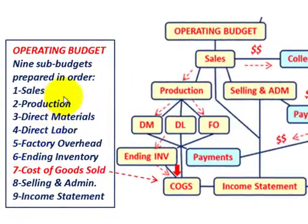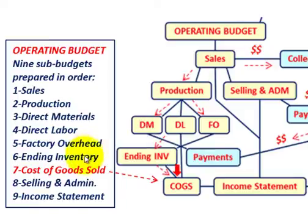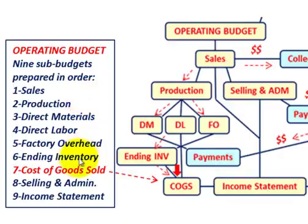Looking at our budgeting diagram for the operating budget, the cost of goods sold is actually the seventh budget we have to develop. We need to know the sales budget, production budget, direct materials, direct labor, factory overhead budget, and ending inventory first. Once we have all those, we can determine our cost of goods sold budget, and then our selling and administrative budget and income statement budget.